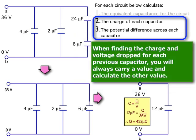Now, working backwards. This is why I had you show everything one step at a time, and you've got to draw it big on the paper. Because when you're finding the charge and voltage drop for each of the previous capacitors, that is, all the ones we've built on the previous steps, you'll always carry a value and calculate the other.